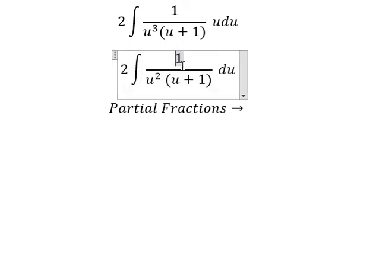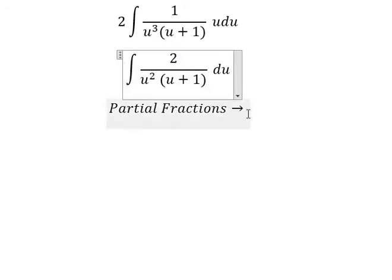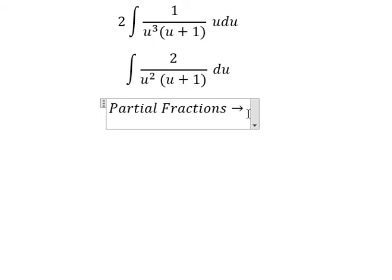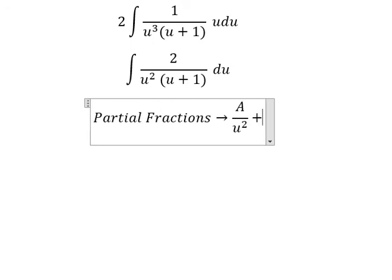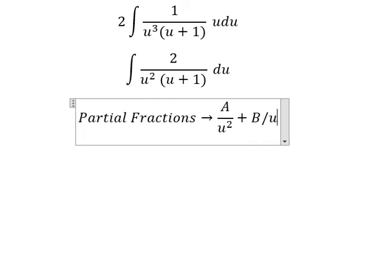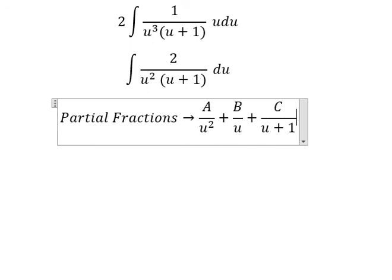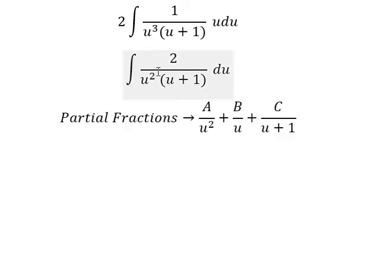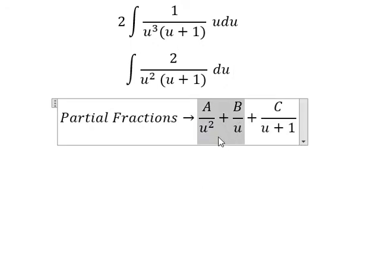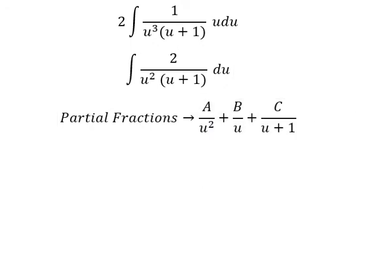I will put the constant 2 outside. Then we set up the partial fraction decomposition: A over u squared, plus B over u, plus C over u plus one. Because we have u to the power of two, we need two fractions related to u.